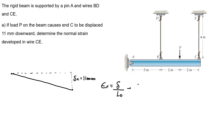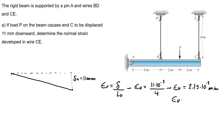That first problem is straightforward. My normal strain developed in wire CE is my displacement — that's 11 times 10 to the minus 3 meters — over the original length of 4 meters. So my strain in C is 2.75 times 10 to the minus 3 meters per meter.